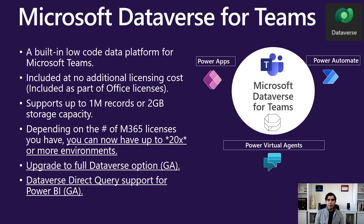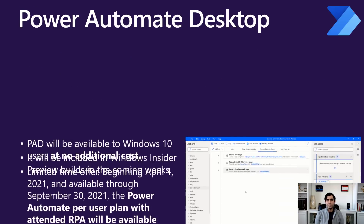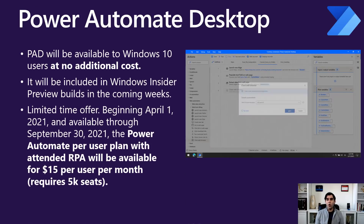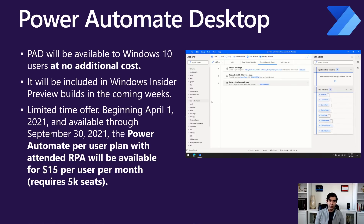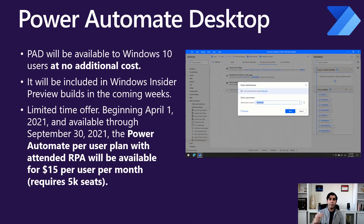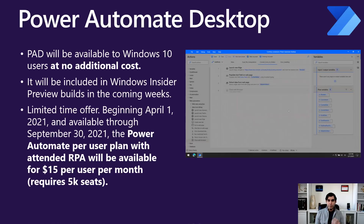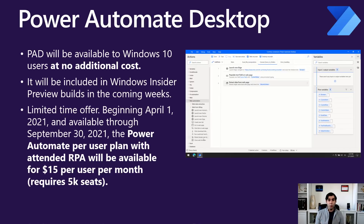In Power BI, direct query support for Dataverse is also now generally available. The next announcement was around Power Automate Desktop, which basically enables robotic process automation capabilities in Power Automate.